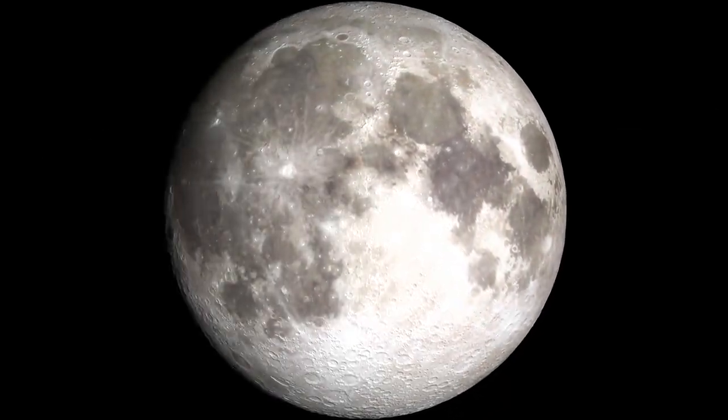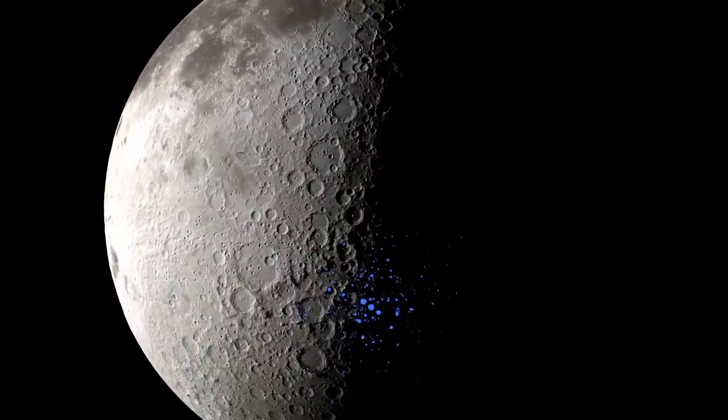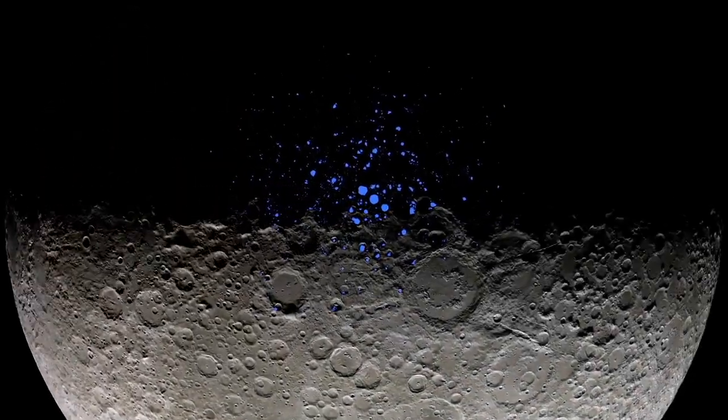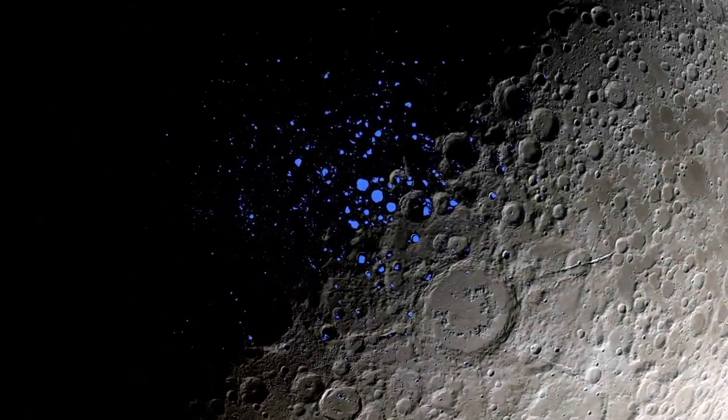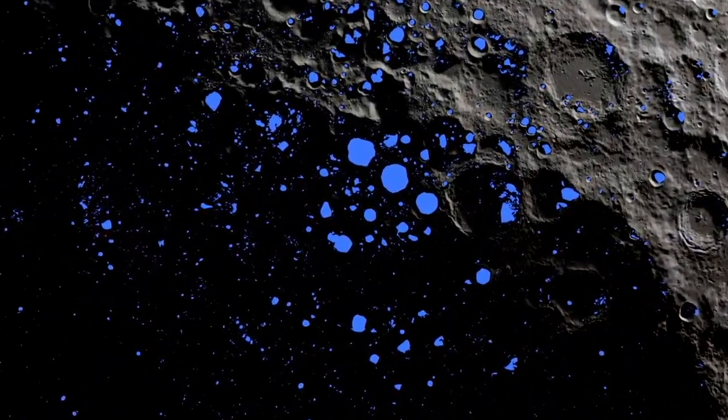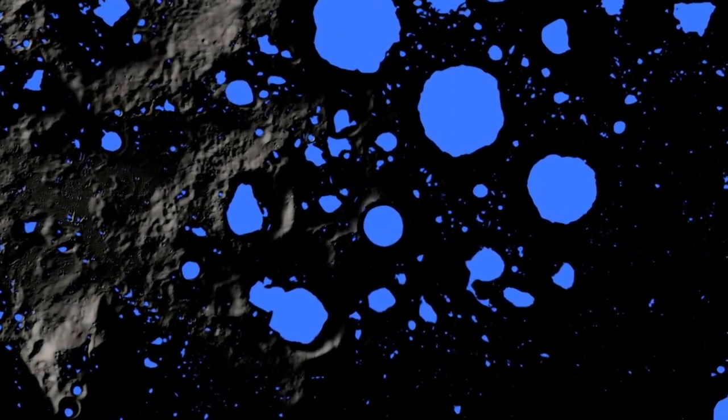Some of the craters near the lunar south pole are in permanent shadow, and the concentration of helium-3 there may be slightly higher by about maybe three times. Those are labeled here in blue.